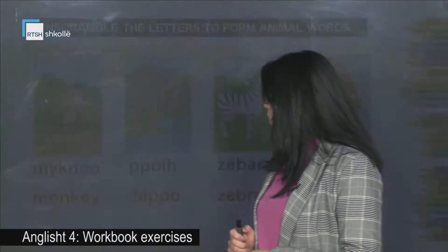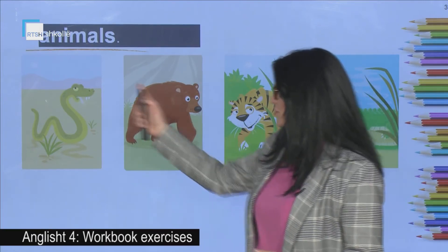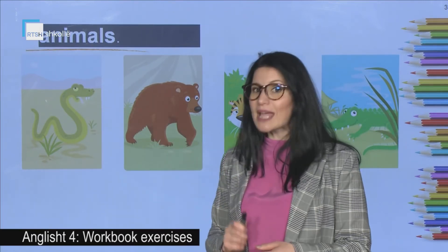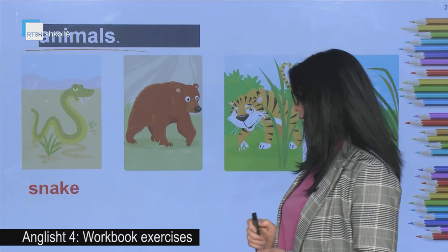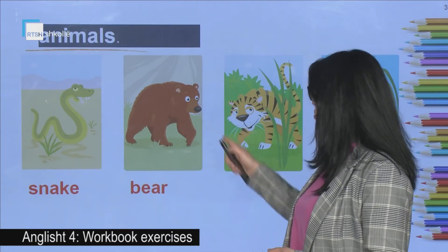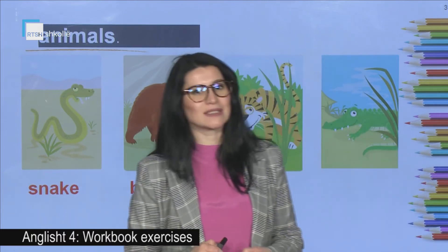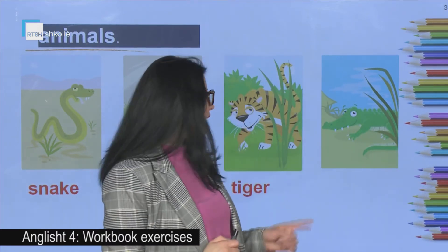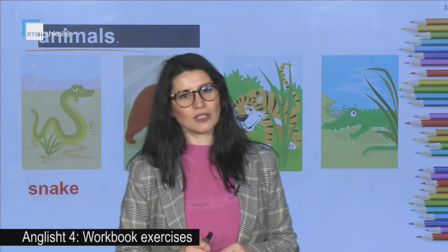Let's go on with some other pictures. We have got the first one that is a snake. Then we have the bear. What about this one? What can you see here? It's the tiger. And the last one is the crocodile.